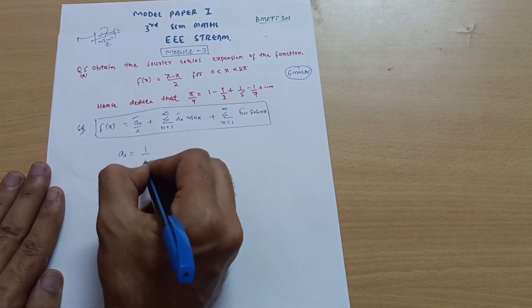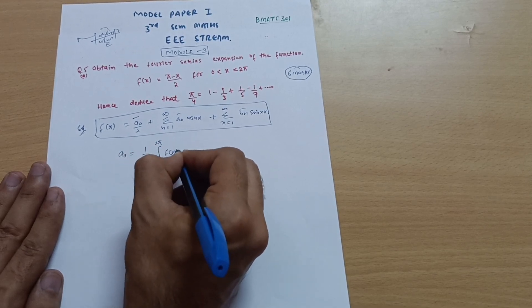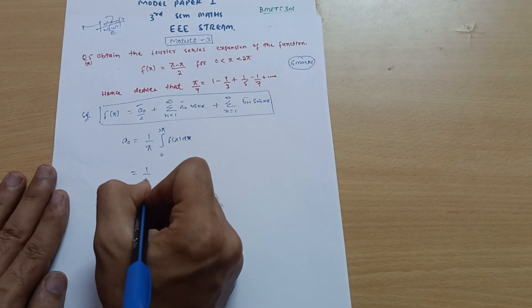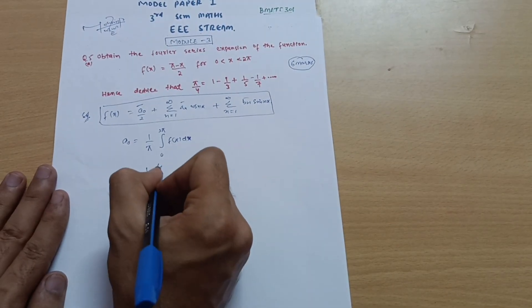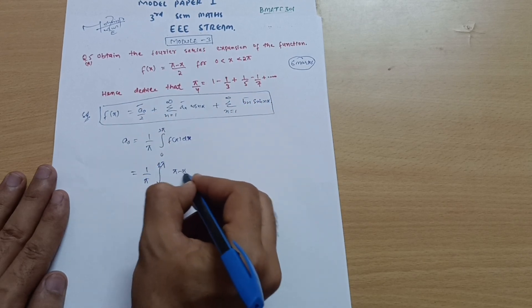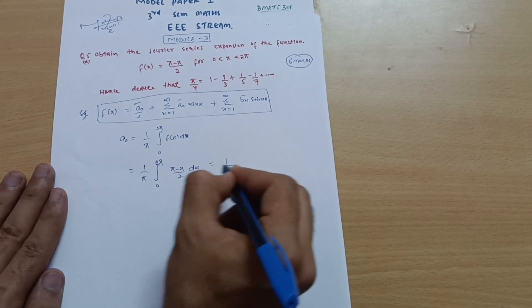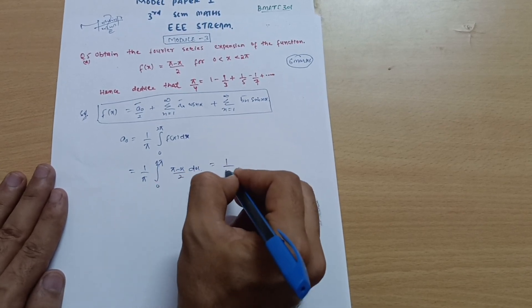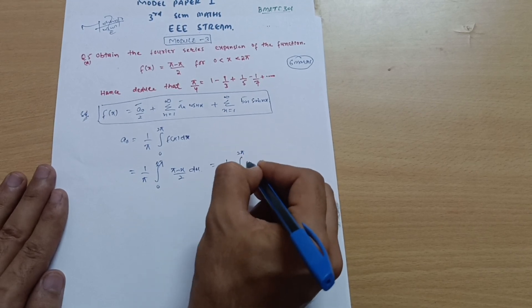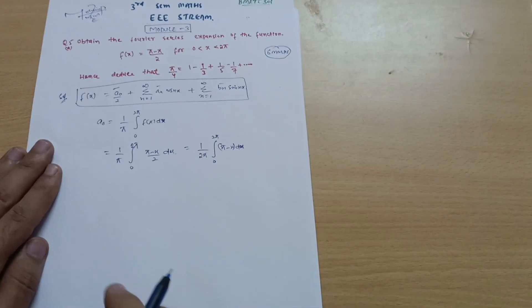First, calculate a₀. The formula is: a₀ = (1/π) ∫₀²π f(x) dx. Substituting f(x) = (π − x)/2, this becomes (1/π) ∫₀²π (π − x)/2 dx, which equals (1/2π) ∫₀²π (π − x) dx.